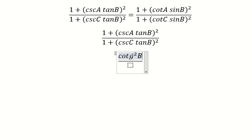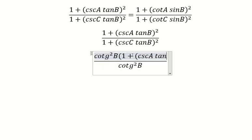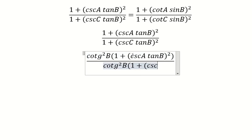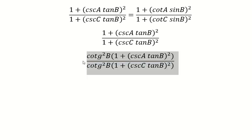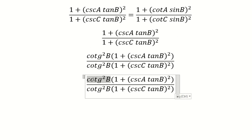That's cotangent B squared. Next, this one multiplied by this one and this one. Because we have the power number two, we can put it inside here.